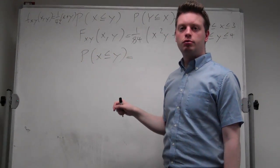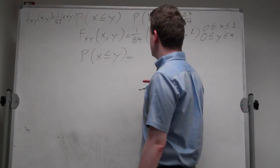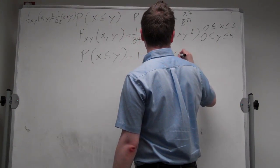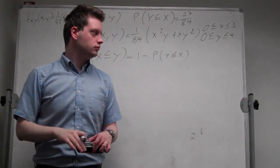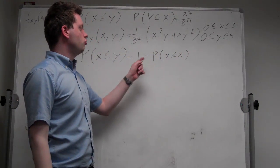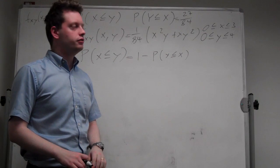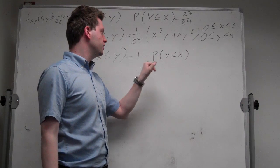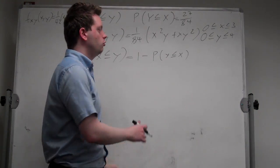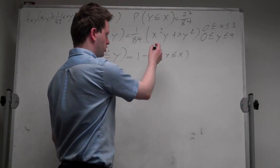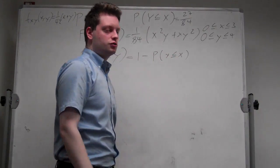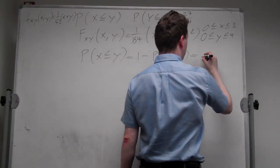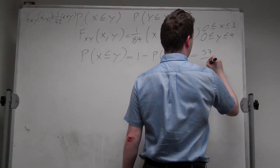And we can look at this probability, so probability of x being less than or equal to y. I can calculate this probability in two ways. The first way is to note that this is just 1 minus probability of y less than or equal to x. So that's just 1 minus the probability we just calculated. So I can set up the problem, calculate this probability and subtract it from 1. Now I won't go through the whole steps of doing the double integral here. It's 1 minus 27 over 84, which is 57 over 84.